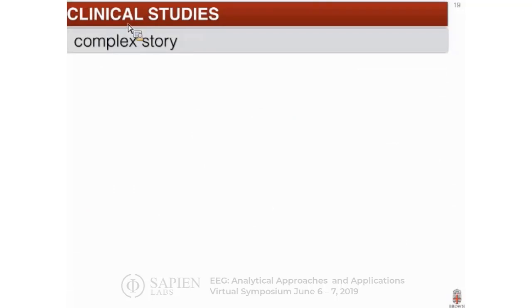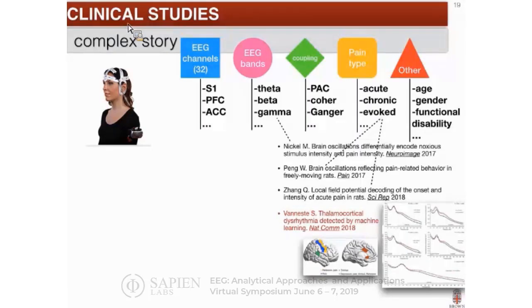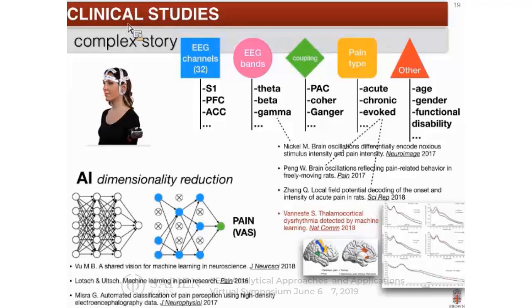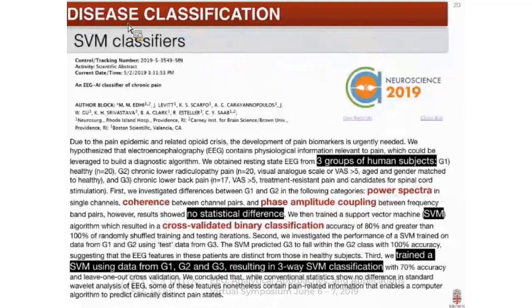We realized that predicting pain or assessing pain using EEG is a more complex story in humans than in a rat. Depending on the number of channels, the bands studied, the coupling at phase-amplitude scale or coherence or Granger causality, the type of pain studied, as well as controlling for variables — all are important factors that need to be addressed when developing new algorithms for pain. I'm pointing to references for folks to consult. Our approach is to scale up the number of features used to make pain predictions, then apply dimensionality reduction to come up with a manageable set of features — so the algorithm is not a black box, but we can dissect out the features and understand the biology behind them.